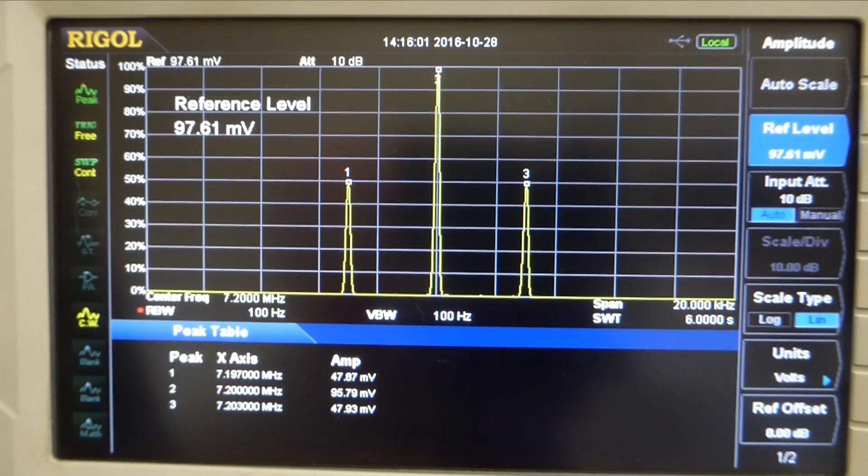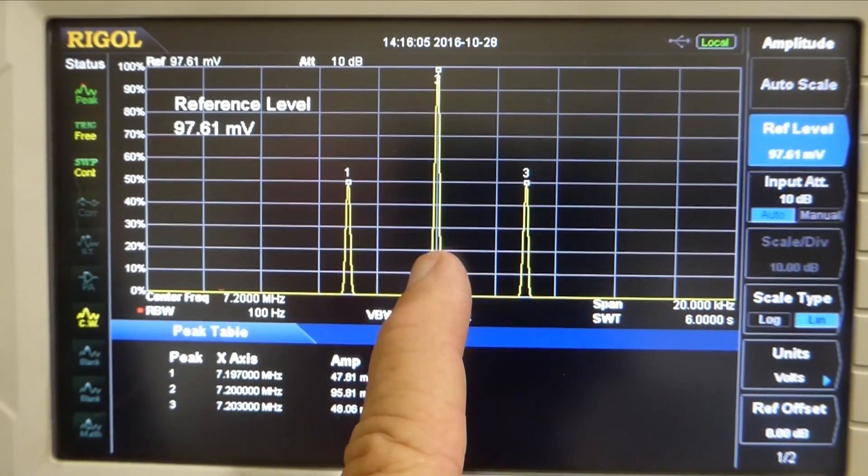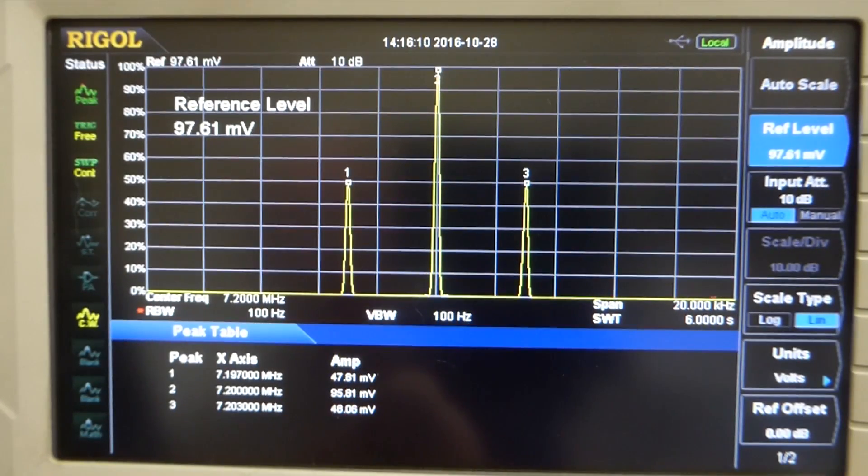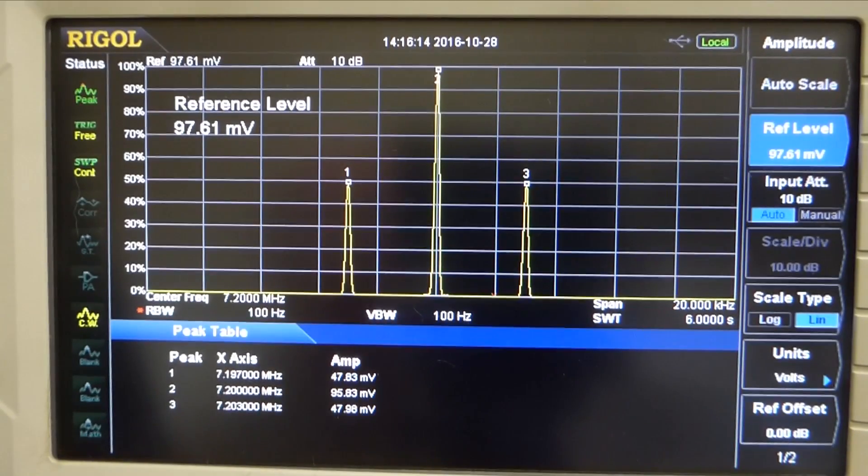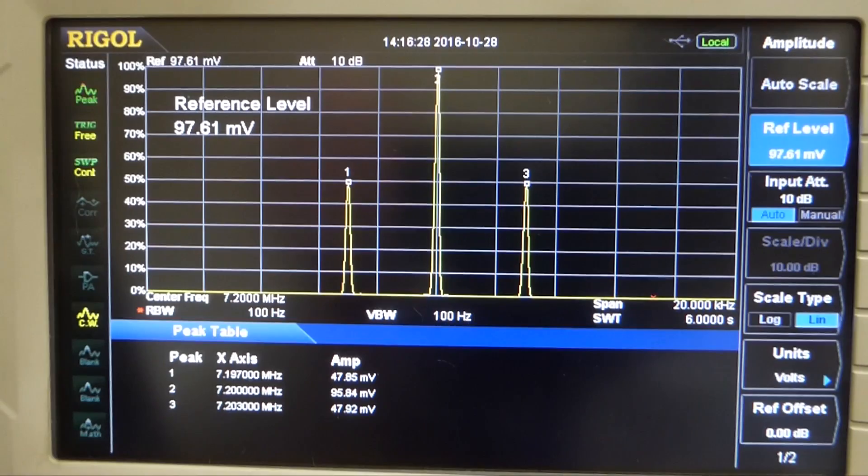We can get more modulation if we're able to get rid of this carrier and re-inject it on the receive side of the equation. As it turns out, I can generate a double sideband signal, which is what that would be, with suppressed carrier. It's very easy to do with the Rigel DG4102. So let me do that.